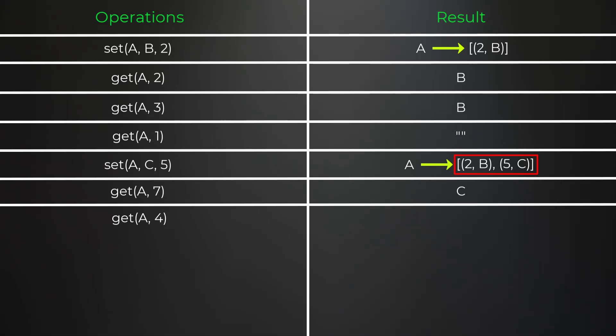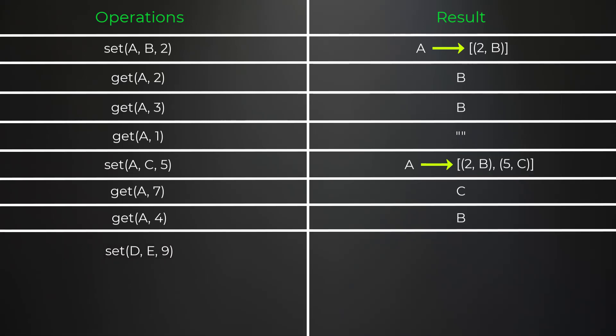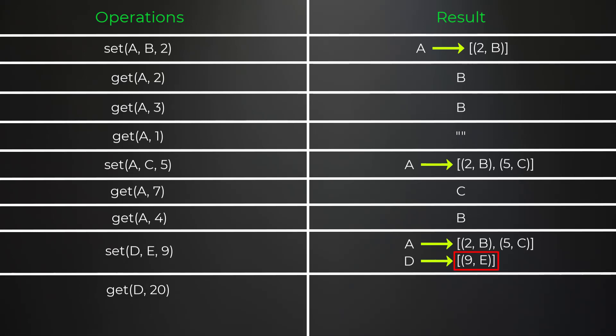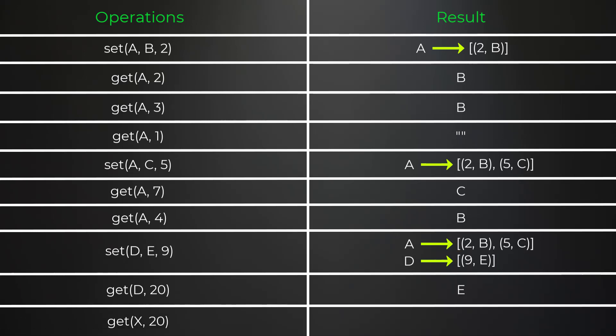A get of key 'a' at timestamp 4 returns 'b' since 2 is the closest number less than or equal to 4. Next we set key 'd', value 'e', timestamp 9, giving us another key mapping to a list of size one. A get of key 'd' at timestamp 20 returns 'e' since 9 is the closest number less than or equal to 20. Finally, a get with key 'x' at timestamp 20 returns an empty string since there is no key 'x'.